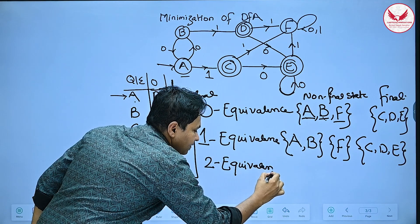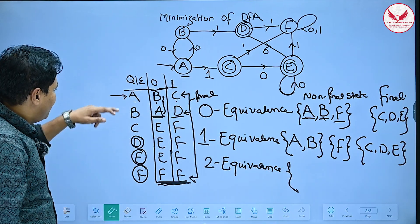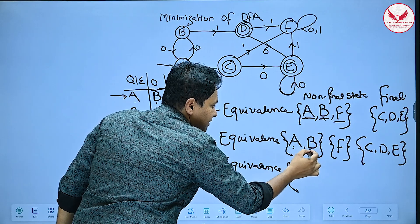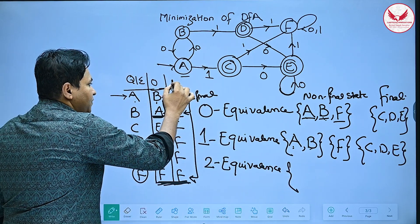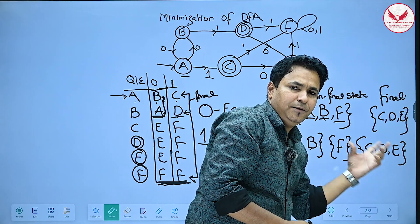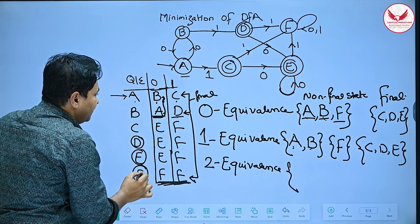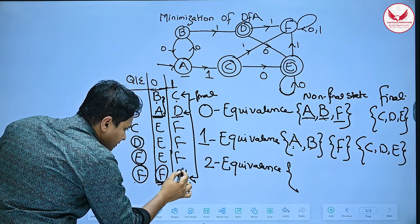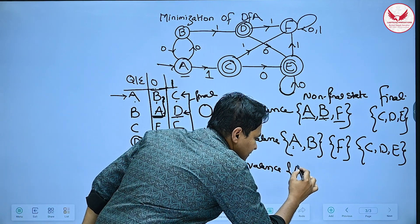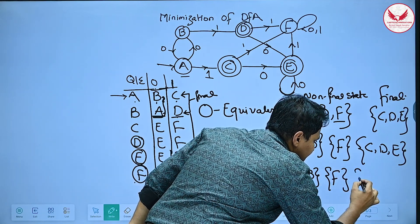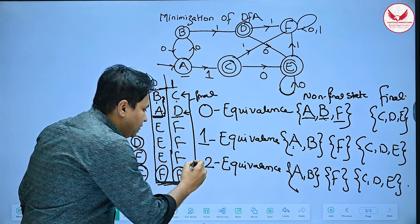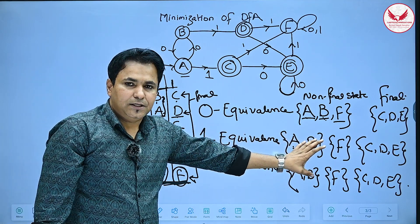For two equivalence, we check A and B. Processing 0 in A and B reaches B and A respectively — both in the same set {A, B}. Processing 1 in A and B reaches C and D — both in the same final set {C, D, E}. For F, processing 0 and 1 keeps it in the same set. Since the two equivalence sets match the one equivalence sets, we stop here.